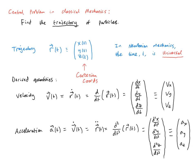Now we have the trajectory, velocity, and acceleration, and we can derive other quantities. The linear momentum p is a vector equal to the mass m times the velocity v. Note the mass is a scalar, so we simply multiply the velocity components by the numerical value of the mass. The angular momentum L is r cross p — the vector cross product of the position r and the linear momentum p. This is a catalogue of the different objects we're interested in in classical mechanics.